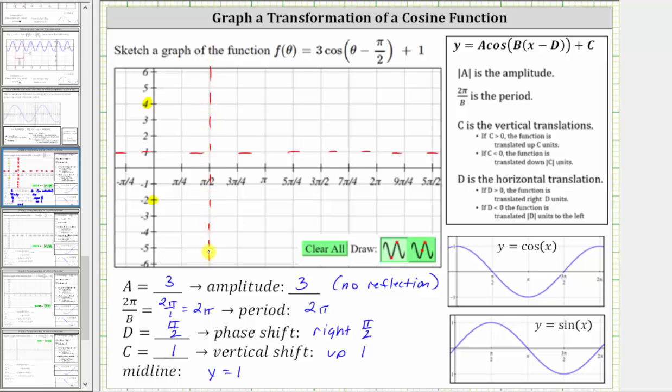From here, because the period is 2π radians, if we add 2π to π/2, we get 5π/2. Therefore, we'll have one complete graph of our cosine function from π/2 to 5π/2.